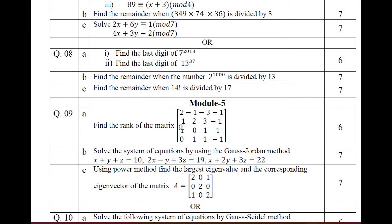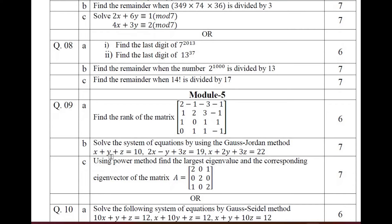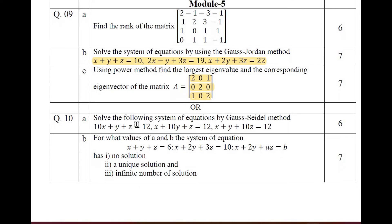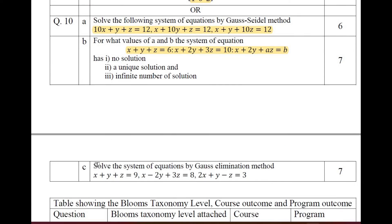Moving on to Module 5 on linear algebra. Question 9a: find the rank of the given matrix. Question 9b: solve the system of equations by Gauss-Jordan method. Question 9c: find the eigenvalues and corresponding eigenvectors of the given matrix. Question 10a: solve the system of equations by Gauss-Seidel method. Question 10b: determine whether the given system of equations is consistent or inconsistent, then find the unique solution or determine if it has infinite or finite solutions. Question 10c: solve the system of equations by Gauss elimination.